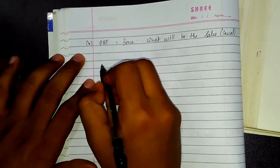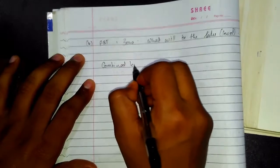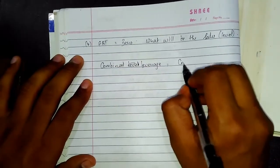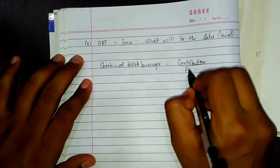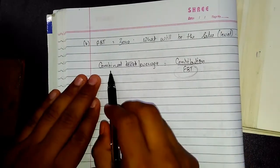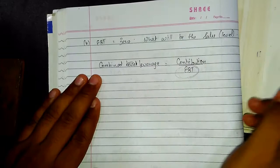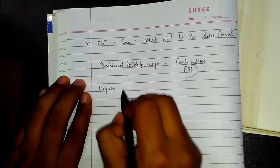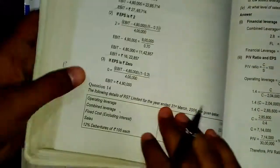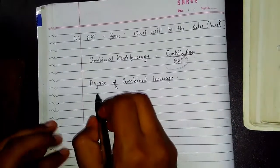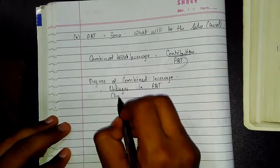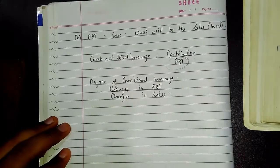How we will find this out? In combined leverage, EBIT comes when the formula is contribution upon EBIT. EBIT comes, so that means we can find out the changes in the level of sales with the help of degree of combined leverage. Since we are having the combined leverage, it is already provided to us in the question. Combined leverage equals 2.8. So we need to just write changes in EBIT divided by changes in sales.